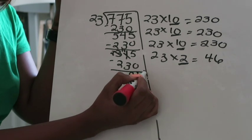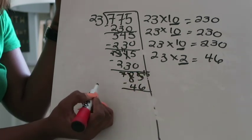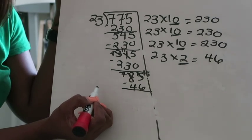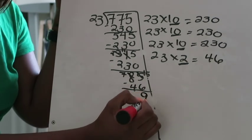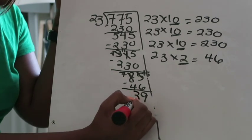I'm going to need to regroup there. This becomes 15, that becomes 7. 15 minus 6 is 9, and 7 minus 4 is 3.